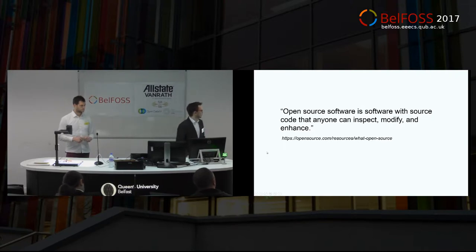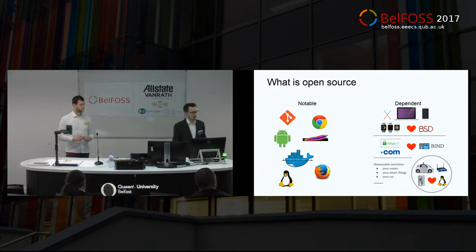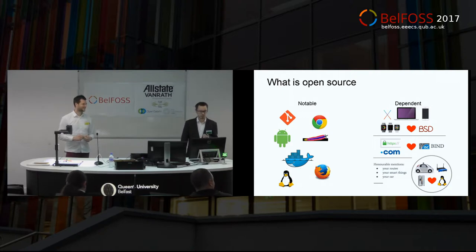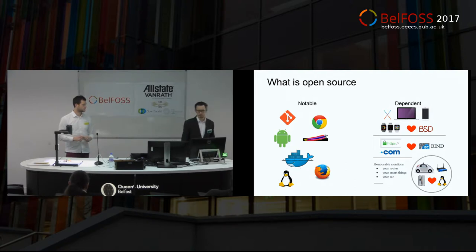Some notable open source products are Git, Chrome, Android, Apache, and Docker. Most of you here probably know more about it than I do. But then we have some things that are dependent on it. In the honorable mentions section, things like smart home devices or your car, once we get fully autonomous, it's fundamental that we find bugs in those systems really quickly — in the same way it's fundamental we find bugs in smart contracts quickly, because if there were ever a problem like the DAO again, you don't want somebody accidentally passing over ownership of your passport to something completely different.